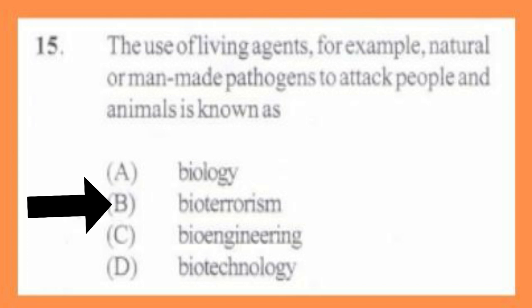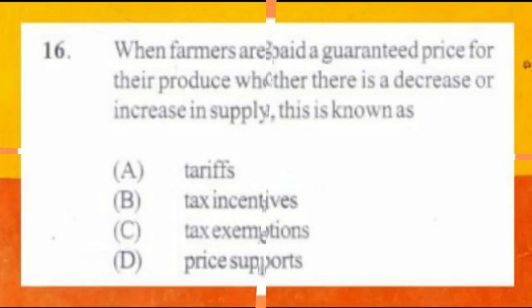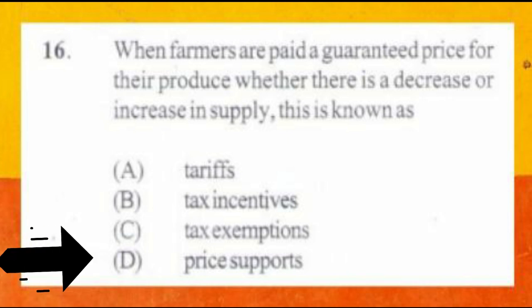Question number 16. When farmers are paid a guaranteed price for their produce, whether there is a decrease or increase in supply, this is known as: A. Tariffs, B. Tax incentives, C. Tax exemptions, D. Price support. The answer is D, price support.